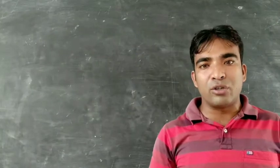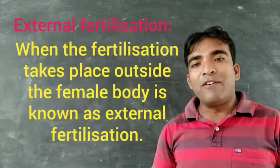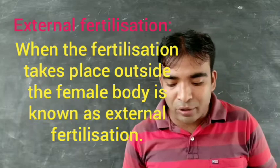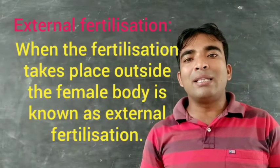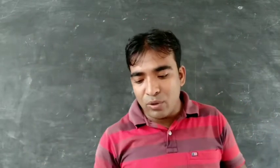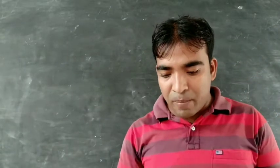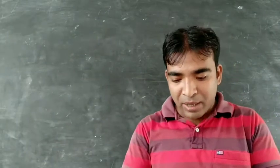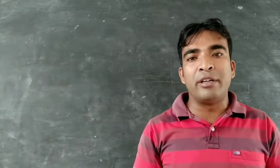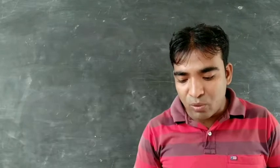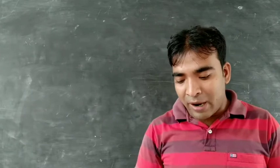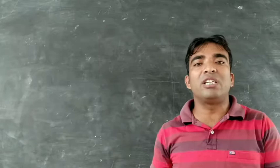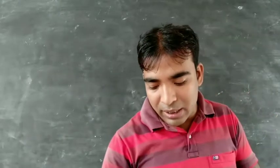Now we will discuss external fertilization. In many animals, fertilization takes place outside the female body. For example, in toads, during the rainy season, the female releases hundreds of eggs. These eggs don't have a hard covering layer — they are very delicate and a layer of jelly holds all the eggs together. When the eggs are laid by the female, the male deposits sperms over them. Each sperm swims randomly in water with the help of its long tail and comes in contact with the egg, so that fertilization happens. This type of fertilization is known as external fertilization because it takes place outside the female body.